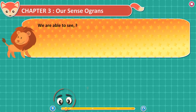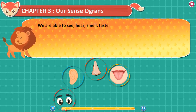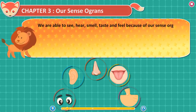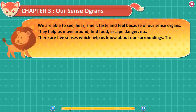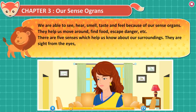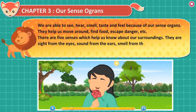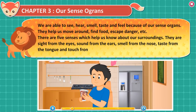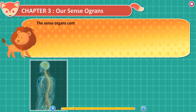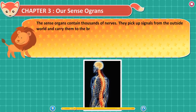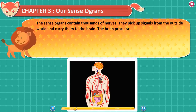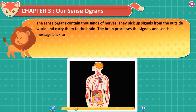We are able to see, hear, smell, taste, and feel because of our sense organs. They help us move around, find food, and escape danger. There are five senses which help us know about our surroundings: sight from the eyes, sound from the ears, smell from the nose, taste from the tongue, and touch from the skin. The sense organs contain thousands of nerves. They pick up signals from the outside world and carry them to the brain. The brain processes the signals and sends a message back to the sense organs.